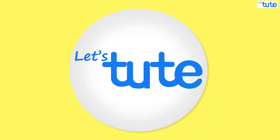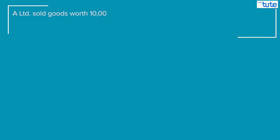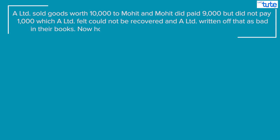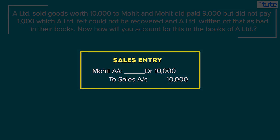Let's Shoot is here to explain this concept in detail. To understand this concept, let's take an example. Suppose A Limited sold goods worth 10,000 to Mohit and Mohit did pay 9,000, but he did not pay 1,000 to A Limited, which A Limited felt could not be recovered. A Limited written off that as bad in their books. Now how will you account for this in the books of A Limited? Firstly, we will pass the sales entry, which would be Mohit account debit to sales account 10,000.